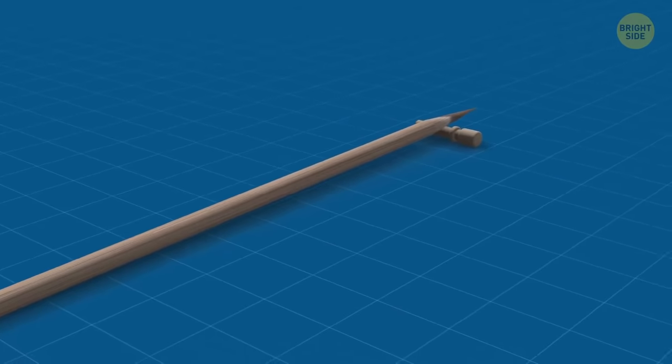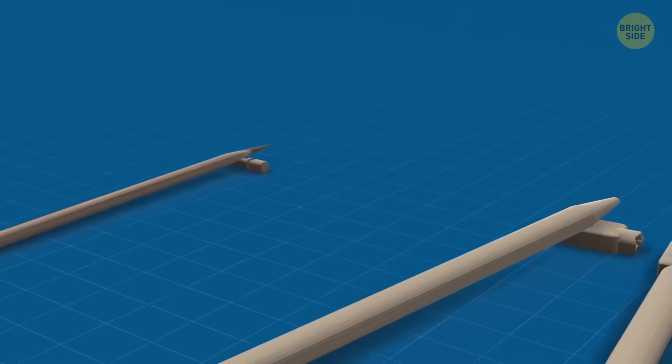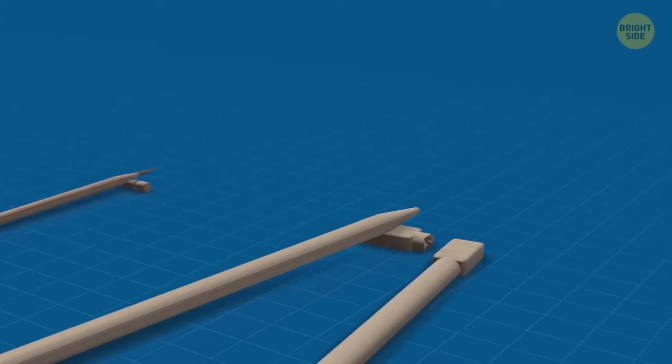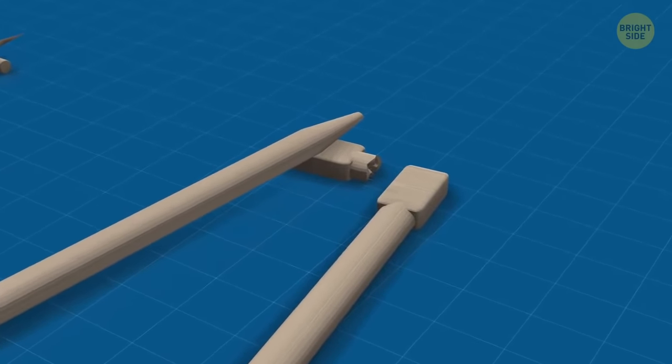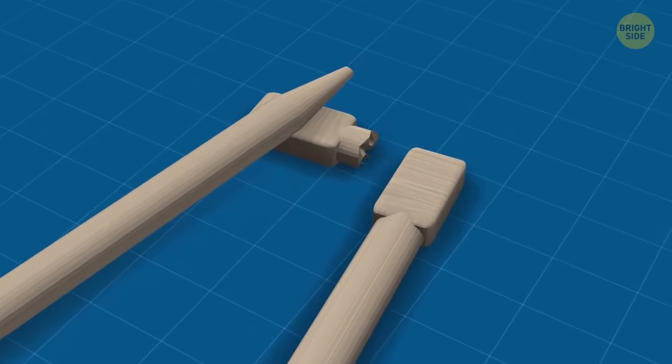You can also make a makeshift stand for disposable sushi sticks. They have a sort of lump at one side before you split the pair. Break that lump off, and when you want to take a sushi break, just place the stick on this stand.